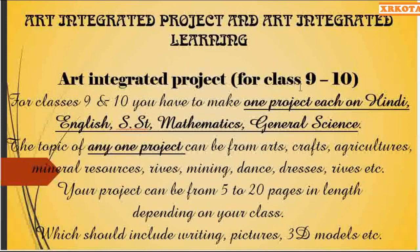For class 9 and 10, they have to make five projects — one in each subject: Hindi, English, SST, Maths, and General Science. Any one project should be based on the paired state; it can be in Hindi, English, General Science, SST, or Mathematics. The other projects can be normal projects based on other topics. The topic of any one project can be from arts, craft, agriculture, mineral resources, rivers, mining, dams, and many other topics.